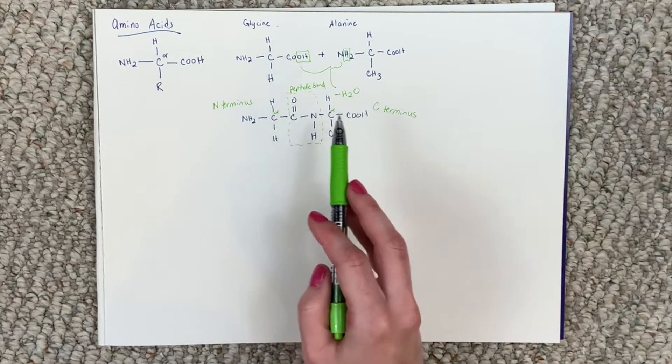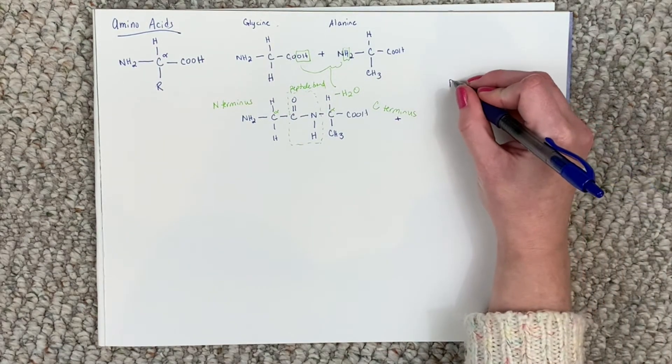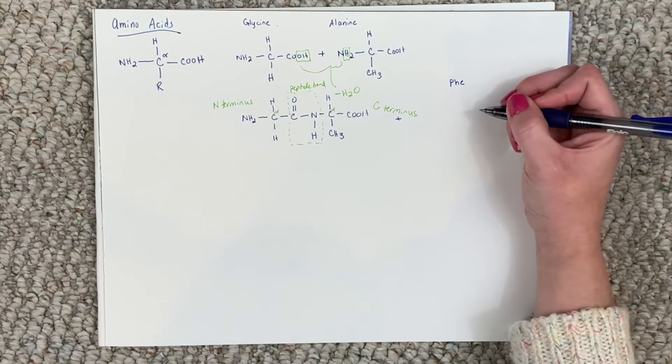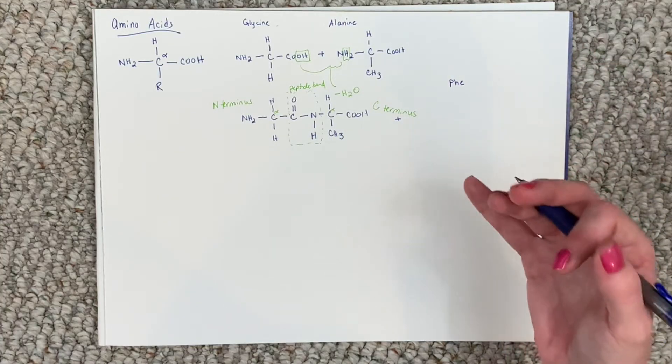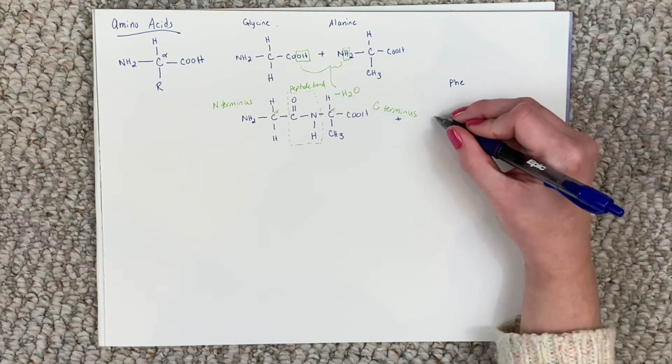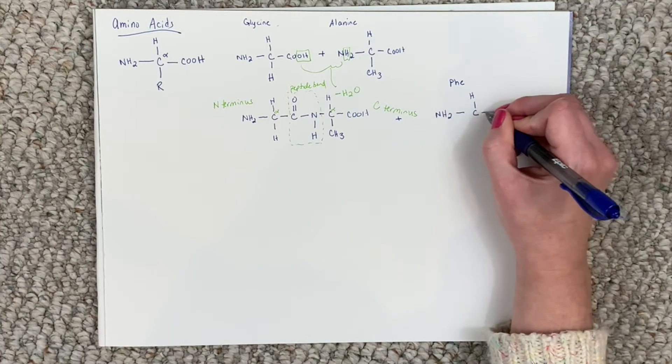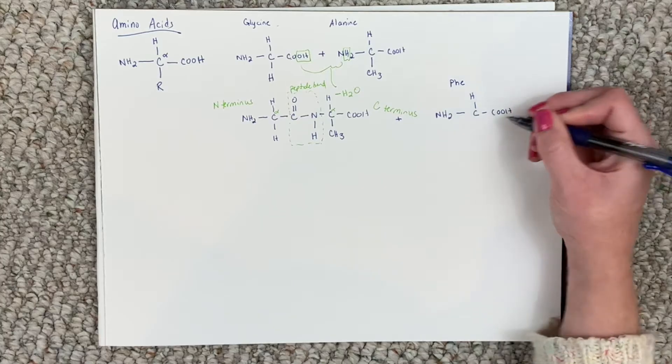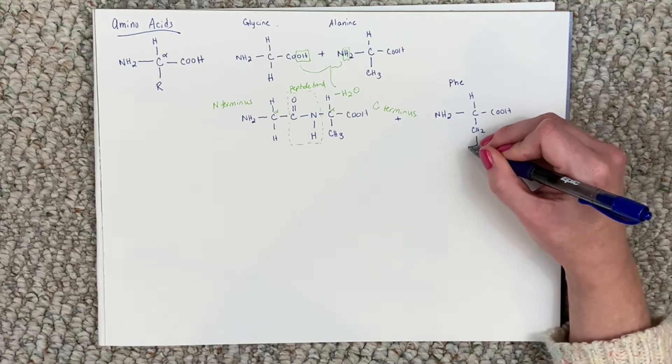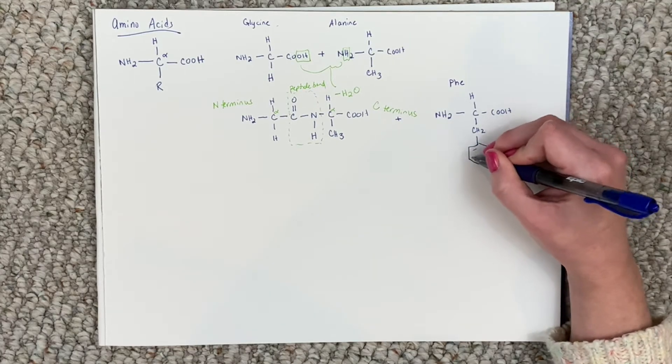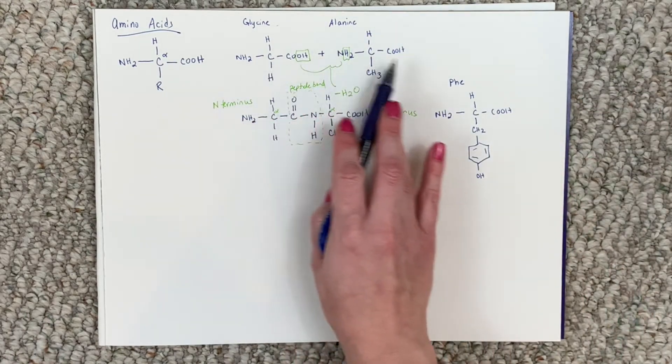So now we have glycine attached to alanine, but what if we want to add another one? Let's say we want to add phenylalanine, which is a bit more complex. It has a more complex R group, but that's fine because still most of the structure is the same for all amino acids. So let's do NH2 to our alpha carbon, a hydrogen, a carboxylic acid. Now the side chain for phenylalanine, which is an aromatic amino acid looks like this.